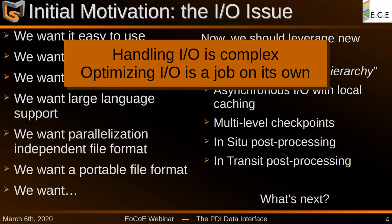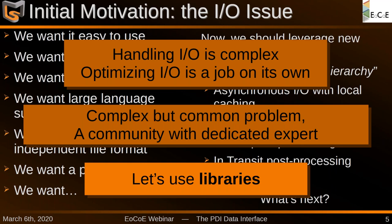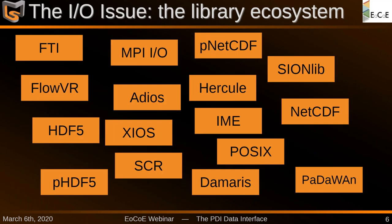How do we solve this complex problem in code? It is a very complex problem — there is no easy solution and optimizing IO is a job on its own. Luckily, it is also a common problem. There is a community with dedicated experts that know how to do IO the best way. So the answer seems quite easy: let's use libraries — IO libraries for HPC.